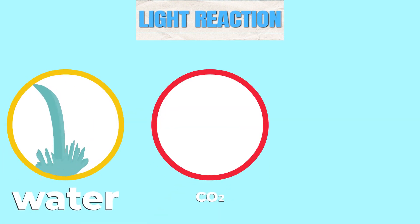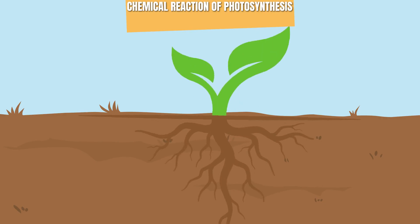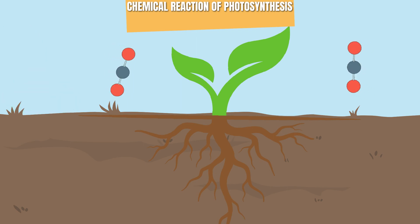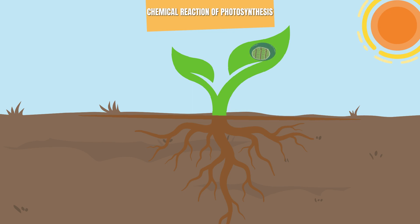A light reaction involves water, carbon dioxide, and sunlight. First, plants use their roots to absorb and store water. Second, plants take in carbon dioxide from the surrounding atmosphere. Third, the chlorophyll in the plant cells absorbs and stores energy from sunlight.